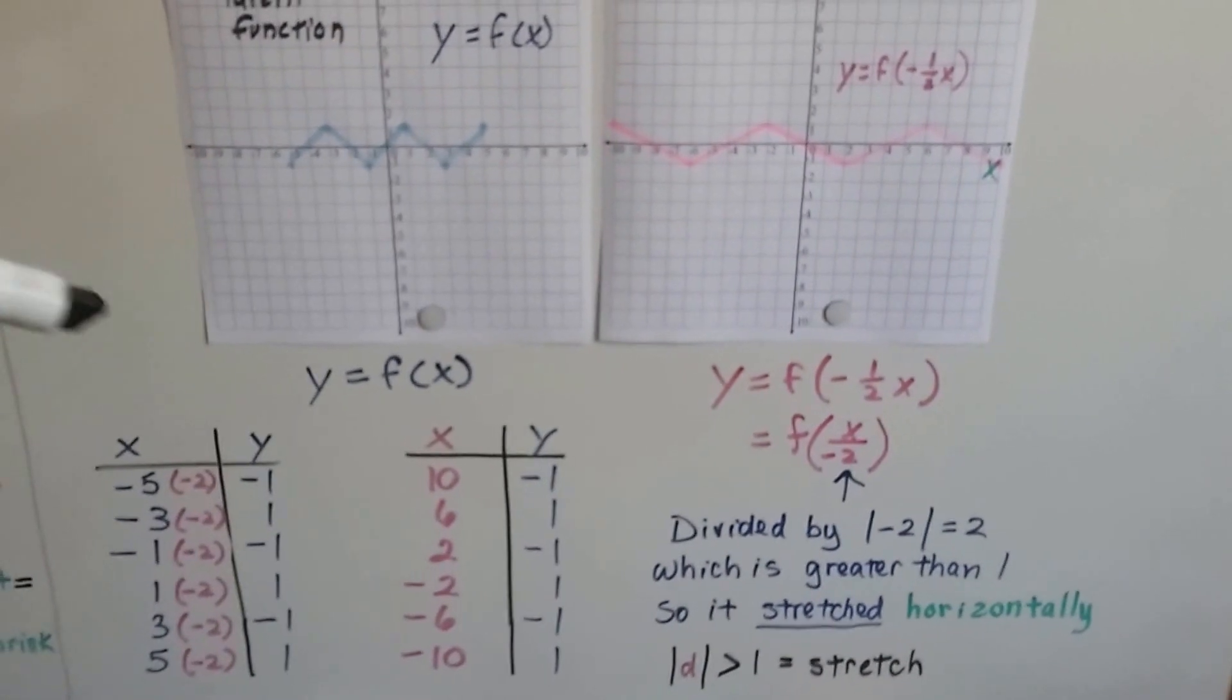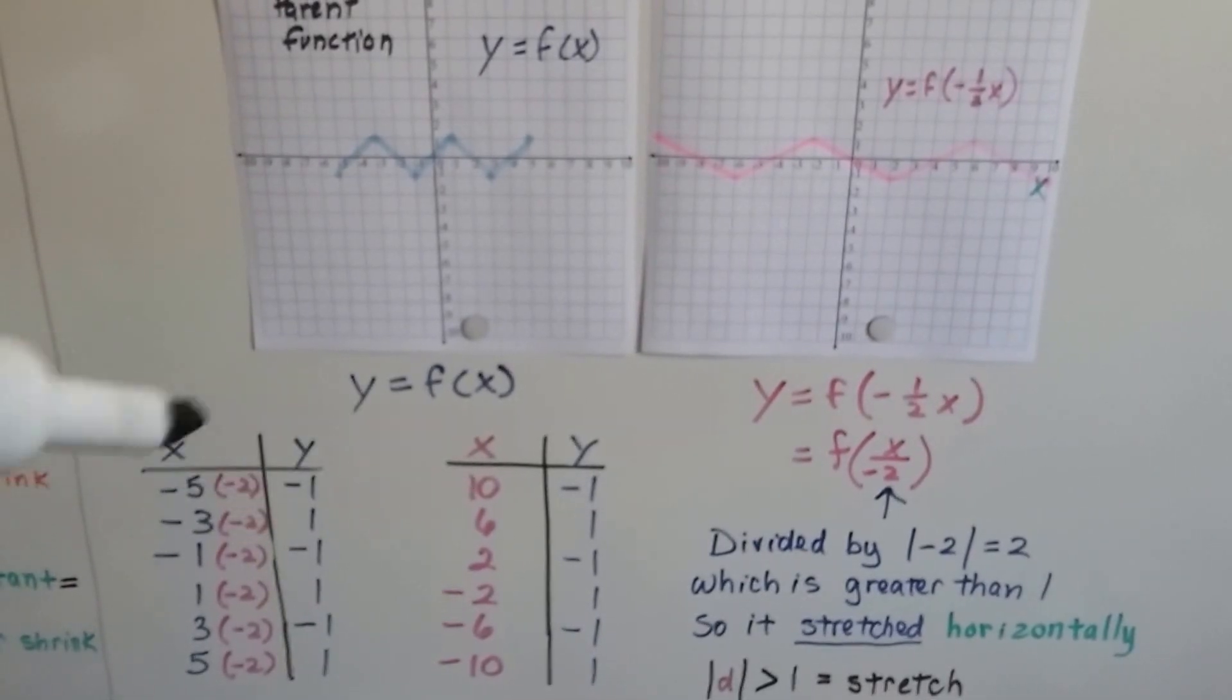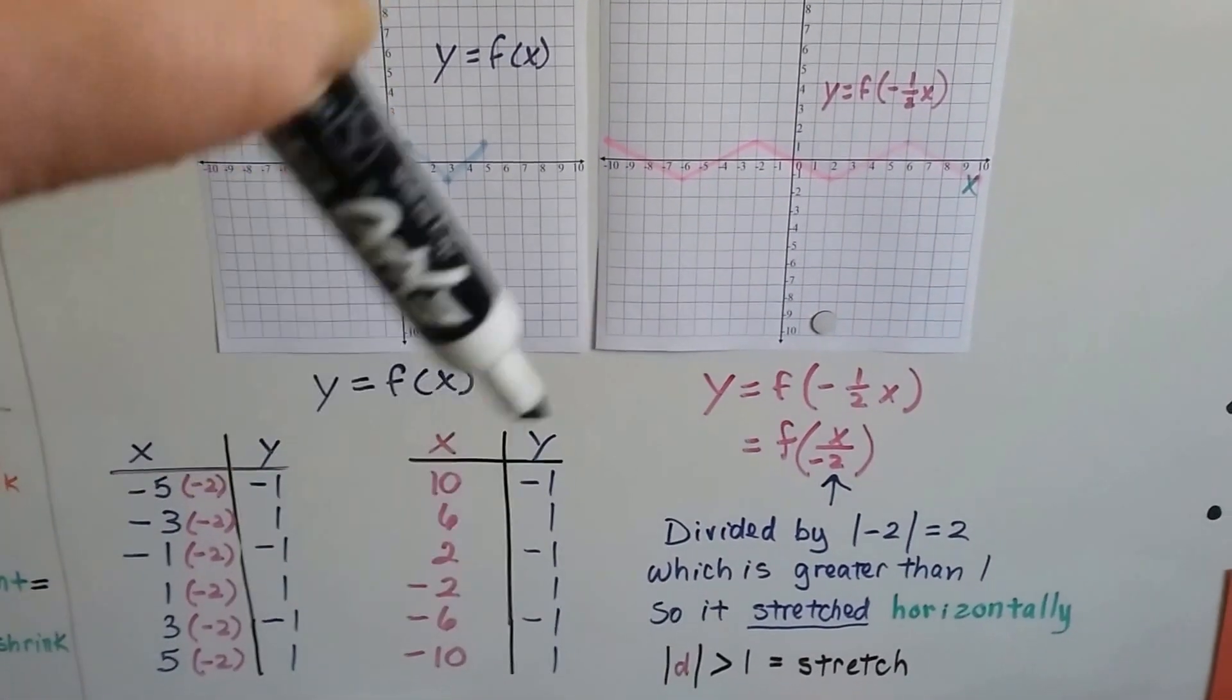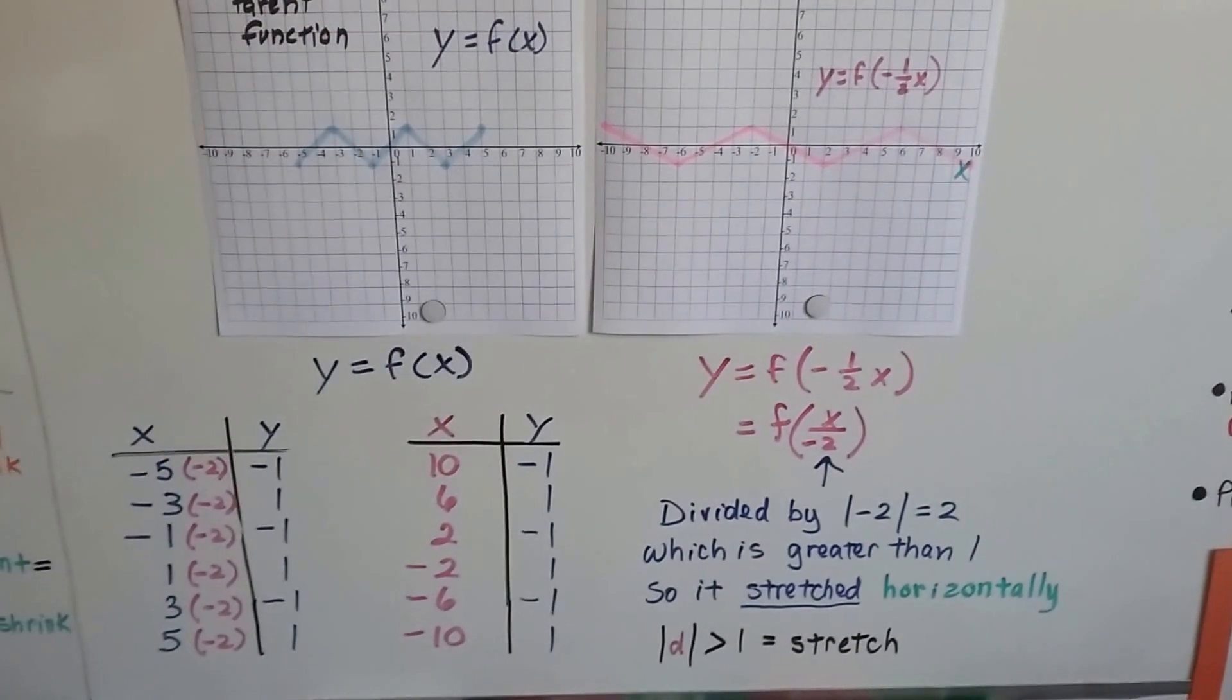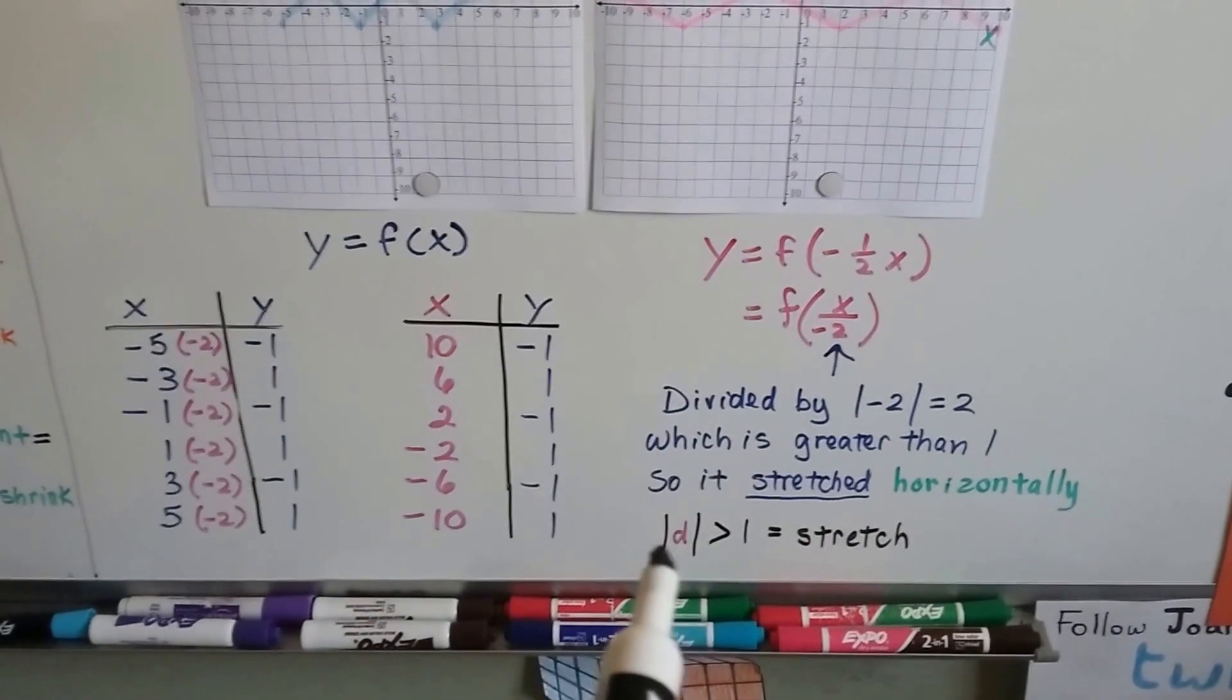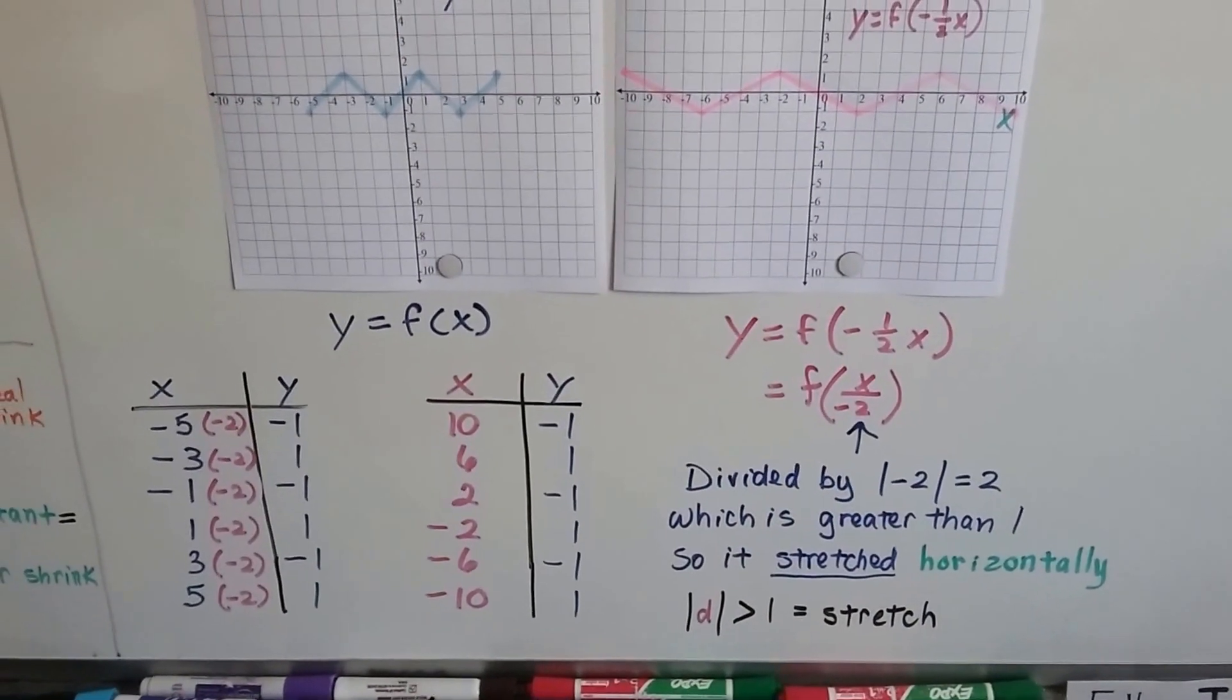And when we multiply x by that negative 2, we have negative 5 times negative 2 gives us a positive 10. Negative 3 times negative 2 gives us a positive 6. And we can graph it using these values in our function table. See how y stayed the same again? And we get it to stretch. The absolute value of the constant was greater than 1, so it stretched. So remember, we're using the absolute value.